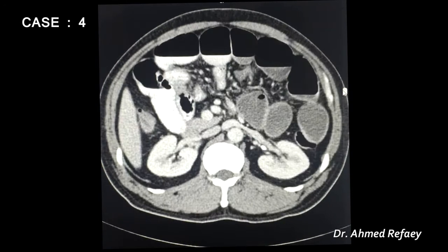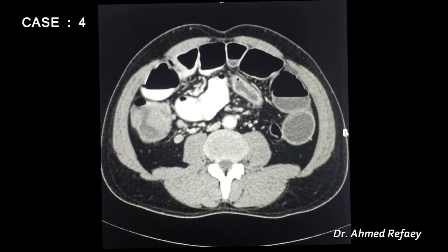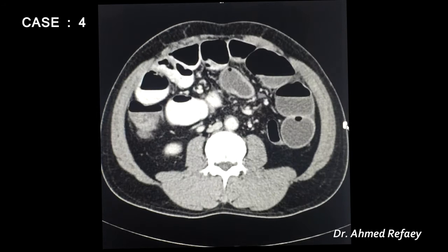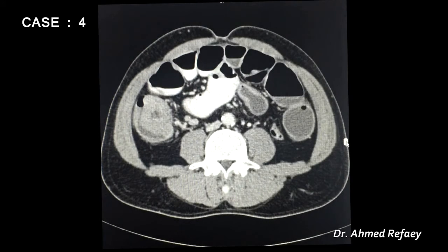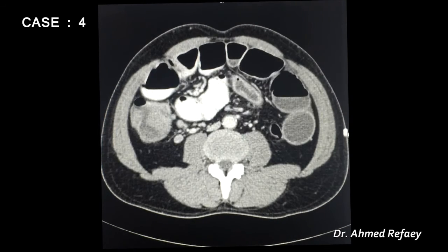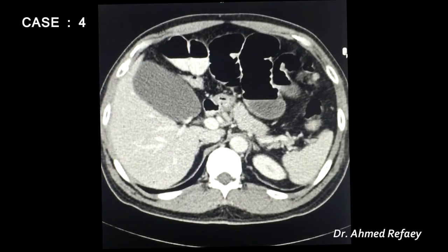Marked dilatation of the small bowel is appreciated with valvulae conniventes. Tracing distally from the ascending colon toward the cecum, a soft tissue mass is identified in the cecum with multiple regional lymph node enlargements. This tumor extends to the terminal ileum and is the cause of the small intestinal obstruction. The diagnosis is a cecal tumor causing marked dilatation of the small bowel.